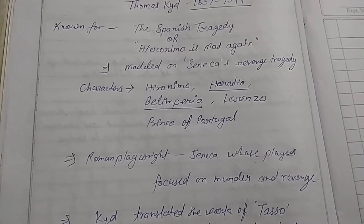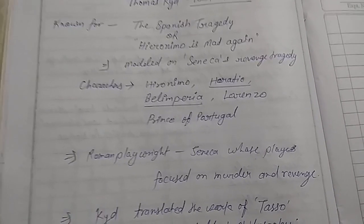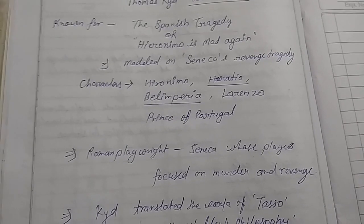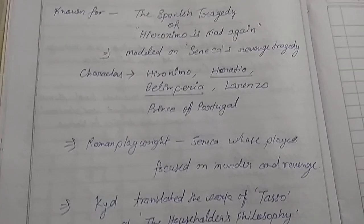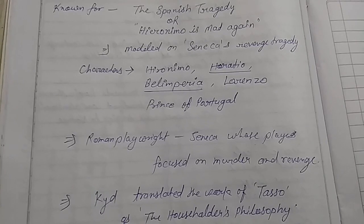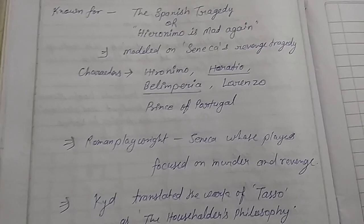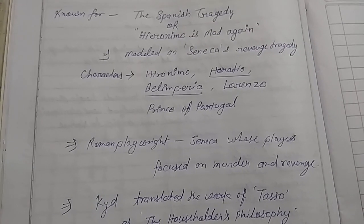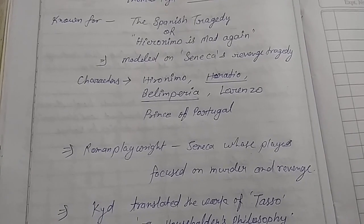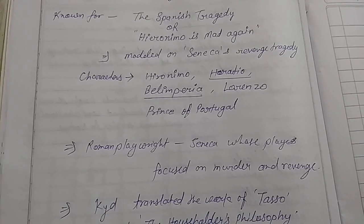This tragedy is modeled on Seneca's revenge tragedy. The question is: what is Seneca's tragedy? Seneca was a Roman playwright whose plays generally focused on murder and revenge. So Thomas Kyd tried to follow the model of Roman playwright Seneca.